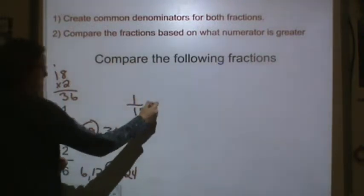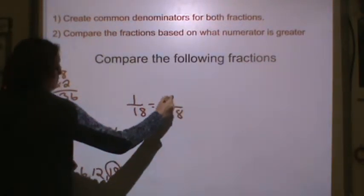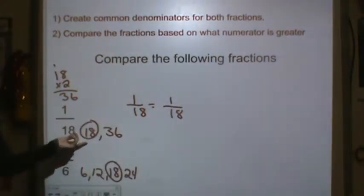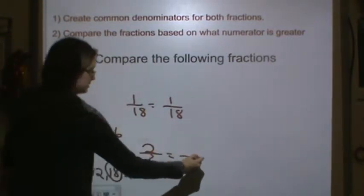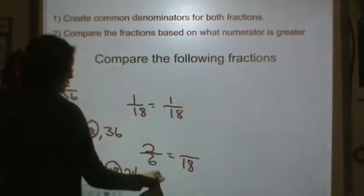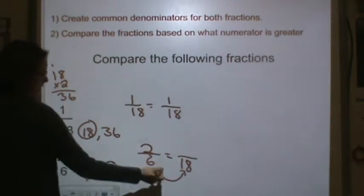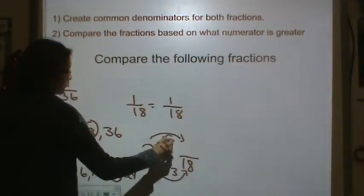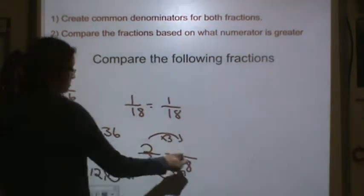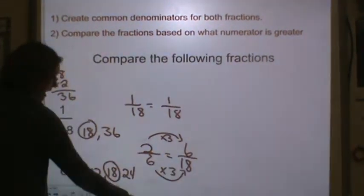So 1/18 is equal to 1/18, right? Our denominator didn't change with this fraction. But 2/6 is equal to something over 18. I know that 6 times 3 is 18, so I need to multiply the numerator by 3. 2 times 3 is 6. Now I can compare.